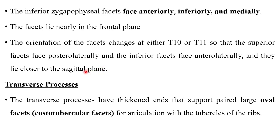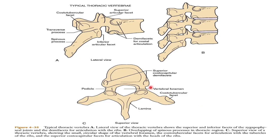Coming to the transverse process, it has thickened ends that support paired large oval facets — the costotubercle facets — for articulation with the tubercle of the ribs. There are two main facets: your costotubercle facets and your demi facets (or half facets), which are the unique feature of the thoracic region.